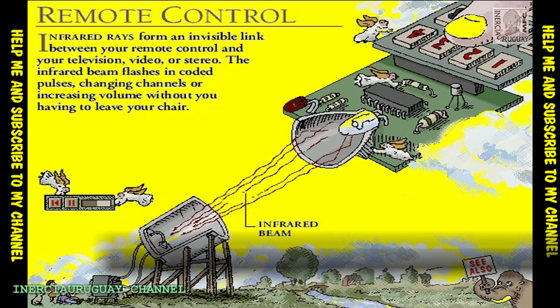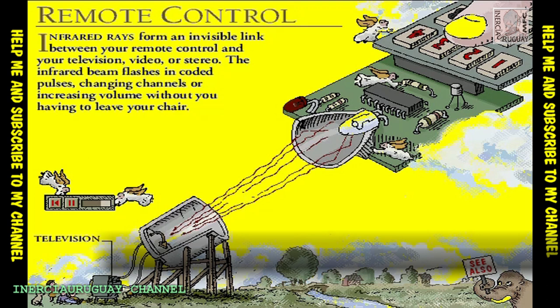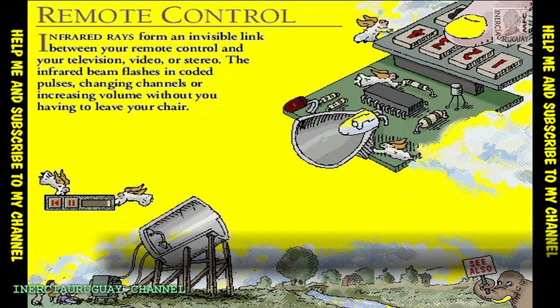At the receiving end, a photodiode in the television changes the infrared pulses back into electrical pulses. A microprocessor in the television interprets the pulses and changes the channel.